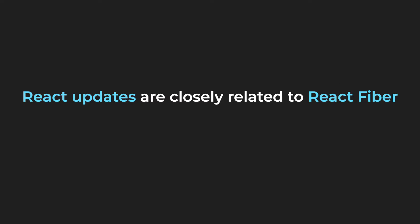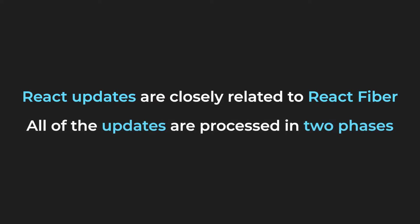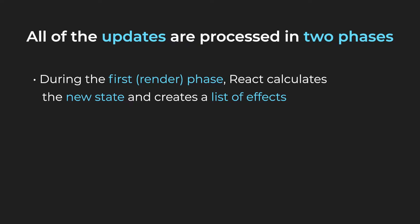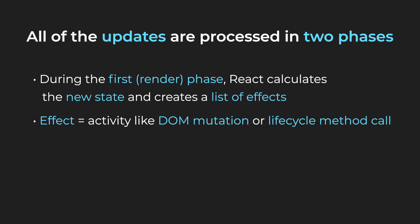React updates have a lot to do with React Fiber. All of the updates are processed in two phases. During the first phase, the render phase, React calculates the new state and creates a list of effects that will be handled during the second phase. An effect is an activity like mutating the DOM, but it can also be a lifecycle method call.